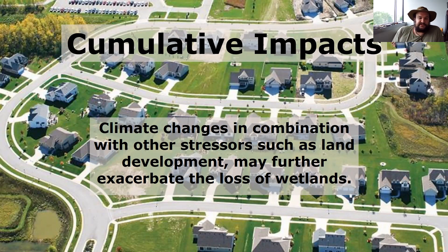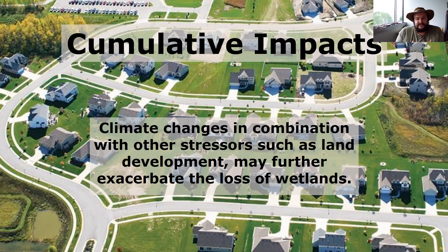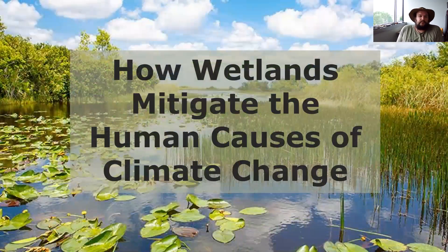Without coastal wetlands — whether swamps or marshes — able to handle sea level rise and storm surges, we're going to see a lot more flooding in urban coastal environments, which we've already started to see this century. Climate change combined with land development further exacerbates wetland loss. Here in northwest Arkansas, increased impervious surfaces create more runoff during heavy storm events and reduce the groundwater recharge that even small wetlands help provide to sustain creek flows during the dry season.